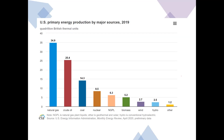Here is another way of looking at the same data. On the y-axis we have primary energy production in quadrillion BTUs, and each bar represents a different form of energy. In order of magnitude: natural gas, crude oil, coal, nuclear, natural gas plant liquids, biomass, wind, hydro, and a combination of other sources.